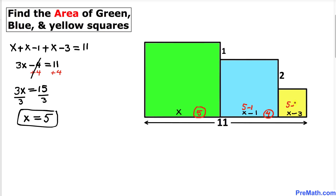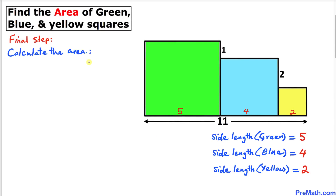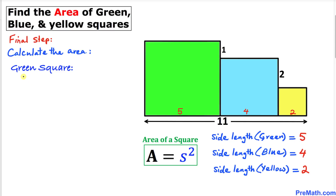For the yellow box, 5 minus 3 means this side is 2 units. So the side length of the green square is 5, the side length of the blue square is 4, and the side length of the yellow square is 2. Now let's calculate the area of each square. Recall the area formula: area equals s squared, where s is the side length. For the green square, the side length is 5, so the area is 5 squared.